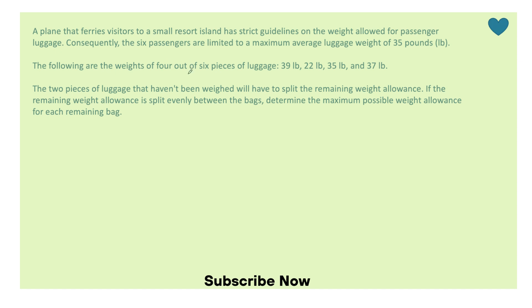The following are weights of four out of the six pieces of luggage. So here is four out of the six. The two pieces of luggage that haven't been weighed will have to split the remaining weight allowance. If the remaining weight allowance is split evenly between the bags, determine the maximum possible weight allowance for each remaining bag.